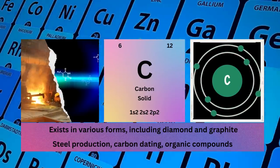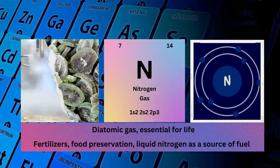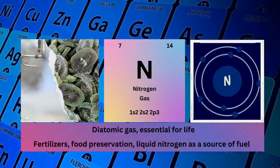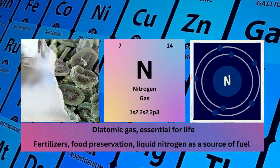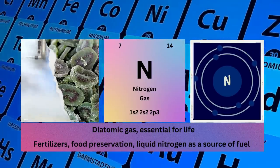Electronic configuration 1s2 2s2 2p3. Oxygen: atomic number 8, mass number 16, symbol O, state gas.